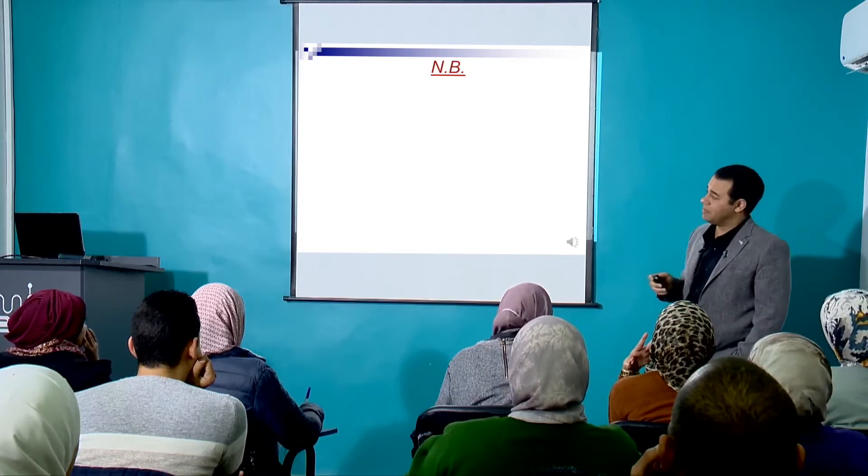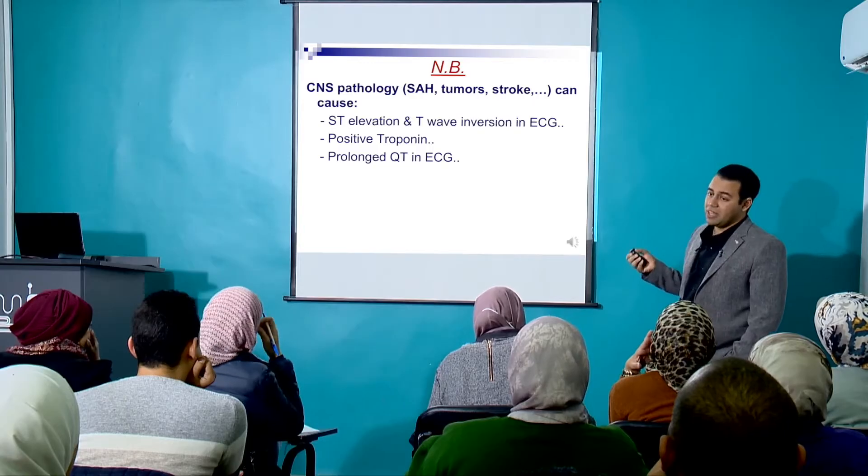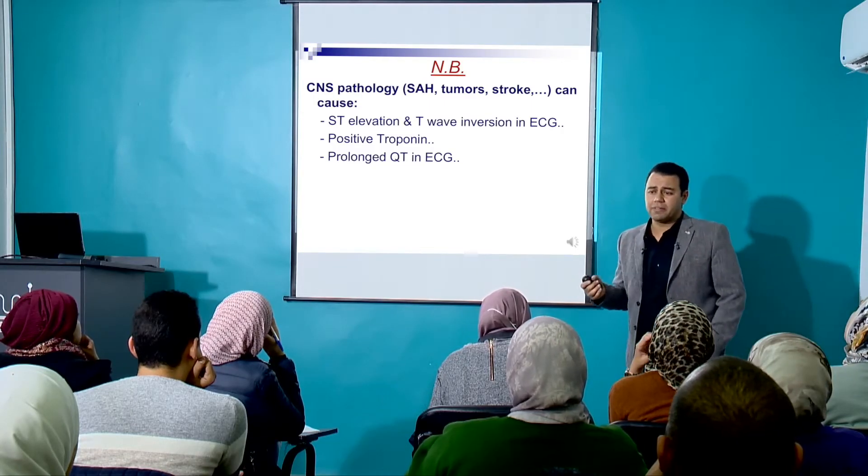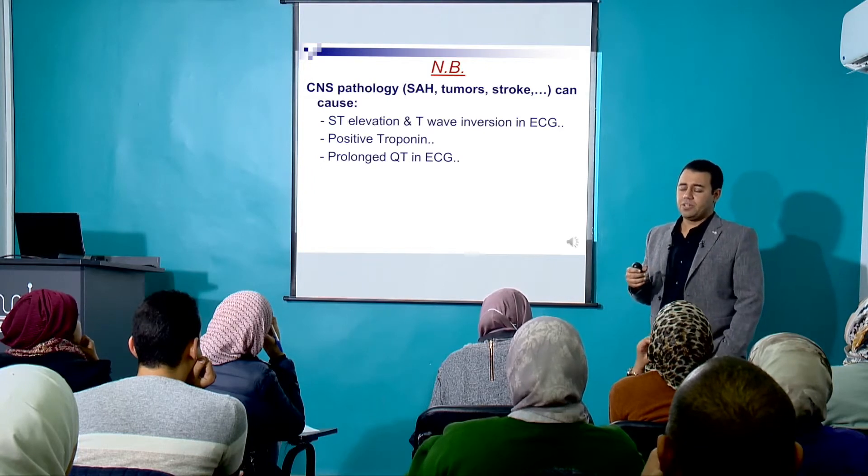Be careful: CNS pathologies like subarachnoid hemorrhage, raised intracranial pressure, or tumors can cause ST elevation on the ECG. You can get ST elevation because of bleeding in the brain. The patient will be unconscious, so you won't get a history of chest pain — you'll find an unconscious patient whose ECG shows ST elevation and positive troponin. So what do we do? Aspirin, clopidogrel, heparin, thrombolysis?